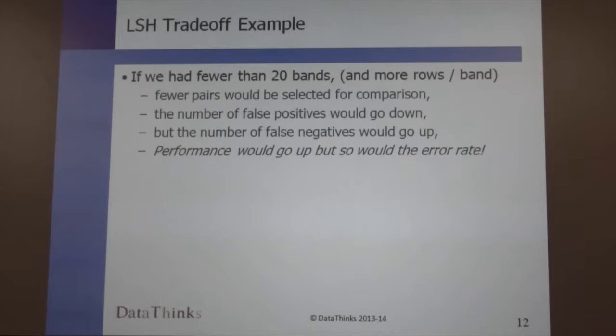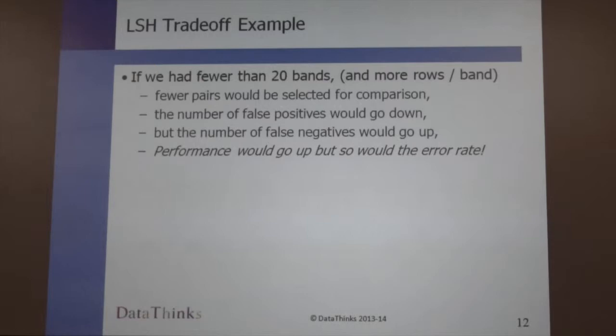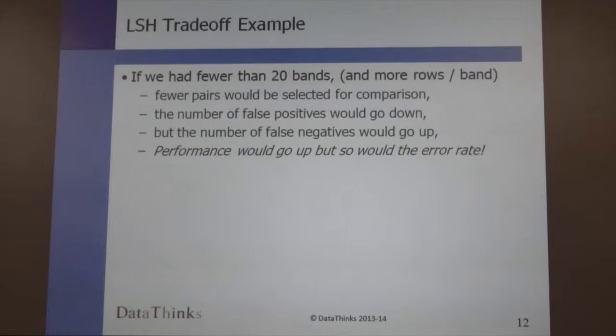If we had fewer than 20 bands, then we would have fewer pairs selected for comparisons. The number of false positives would go down, the number of false negatives would go up, and performance of our system would be much better, but the results wouldn't be as good. We end up with an algorithm that we can actually tweak and tune to get the kinds of results we're looking for, and there's quite a bit of tuning we end up doing.